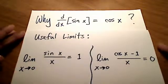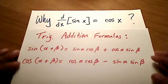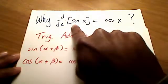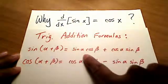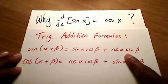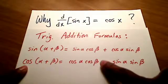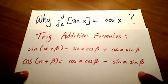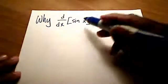That second limit is equal to 0. So we're going to need these two useful limits, and we're also going to need some trig addition formulas. For proving why the derivative of sine is equal to cosine, we're just going to need the first addition formula for sine. You can use the second one for cosine if you wanted to prove why the derivative of cosine is equal to negative sine. So armed with those things, let's figure out why the derivative of sine is equal to cosine.